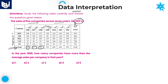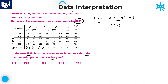Look at the first question: in the year 1988, how many companies have more than average sales per company in that year? First of all, in 1988 we need to calculate the average. Average is equal to sum of observations divided by number of observations. The 1988 average equals the total sum in 1988 — the total sum is already given in the table.